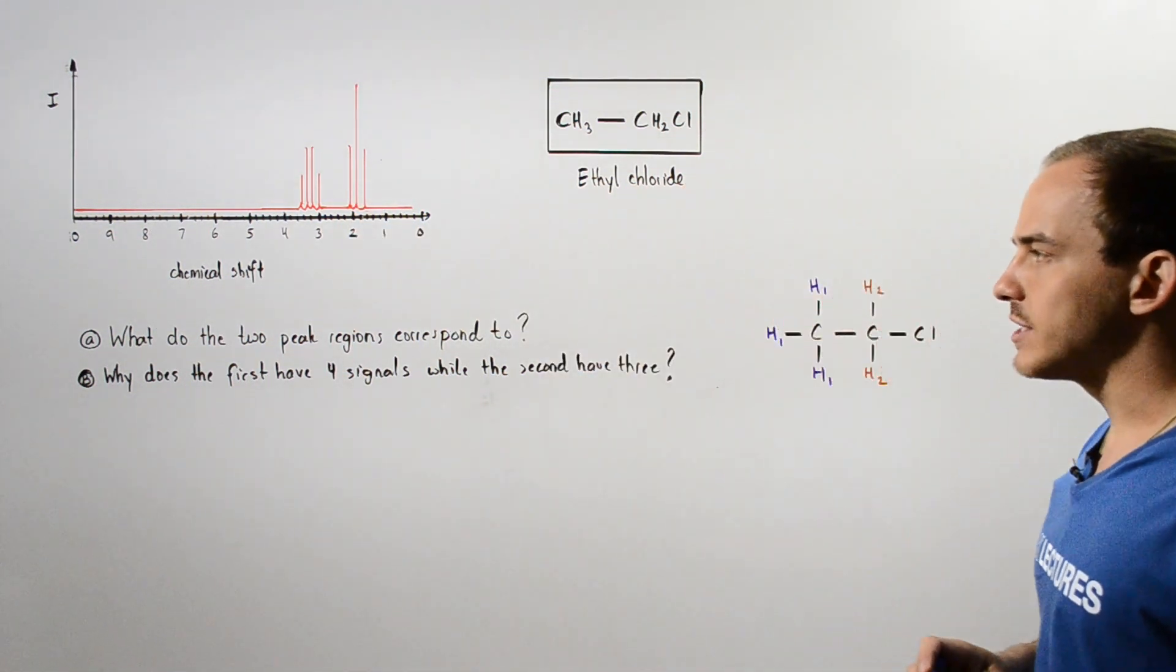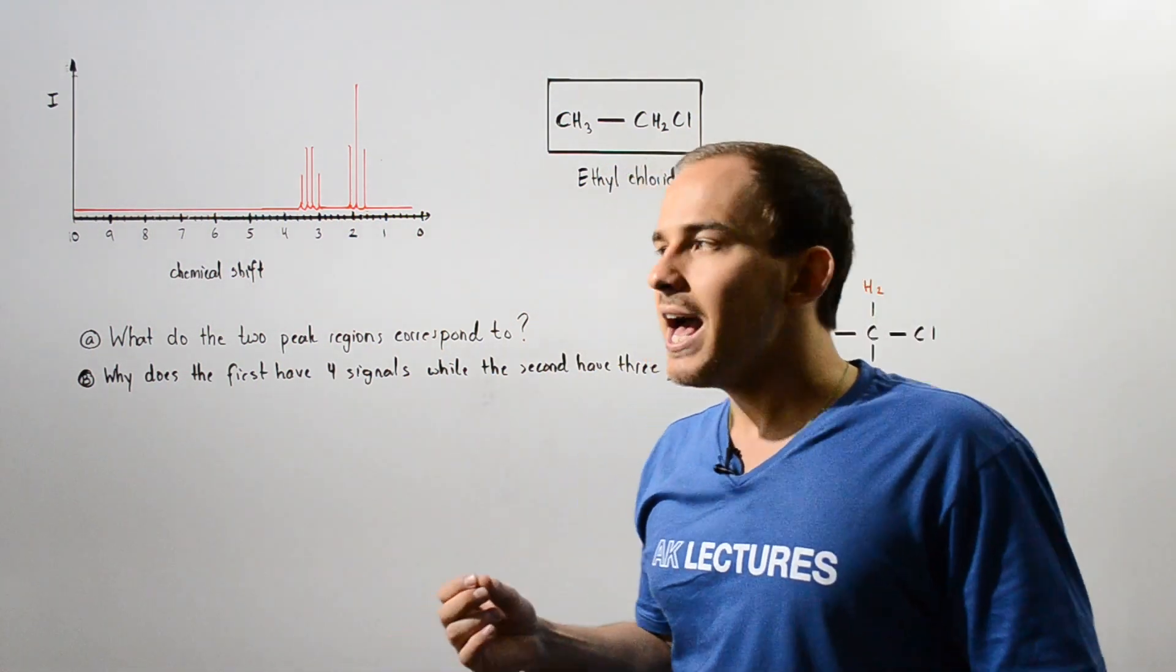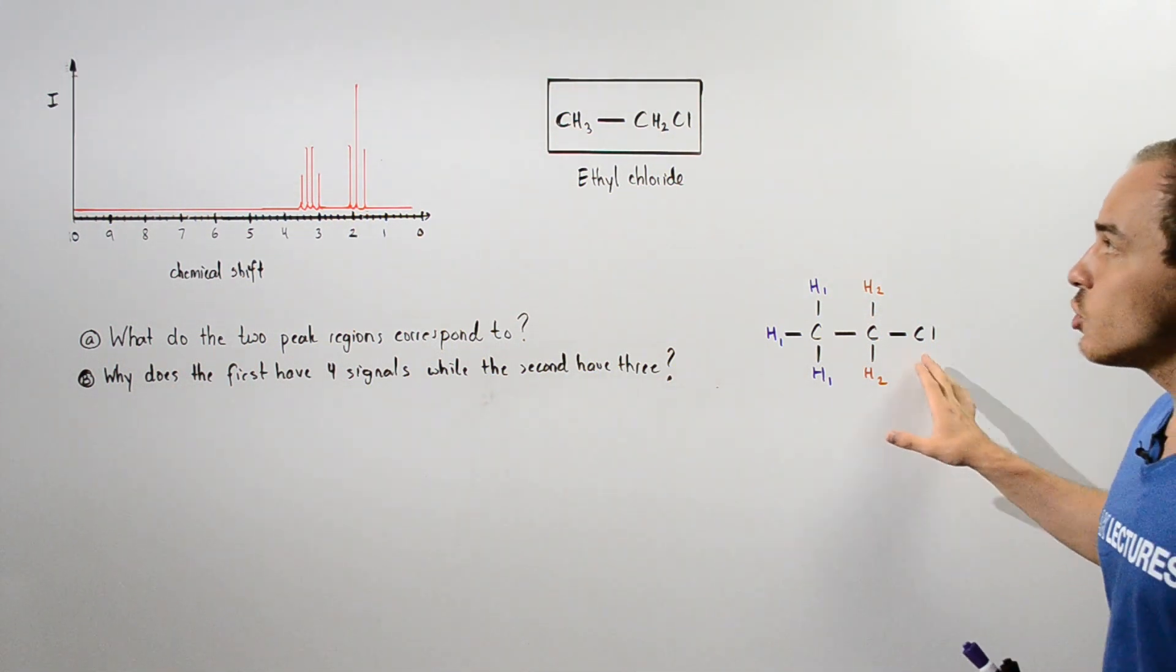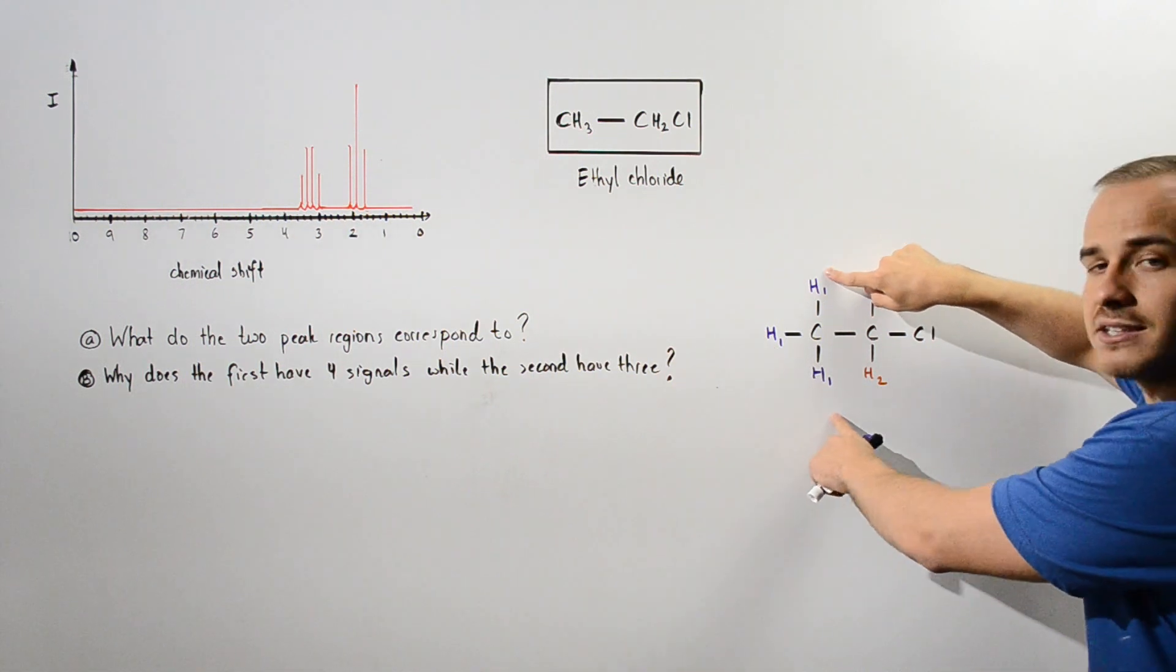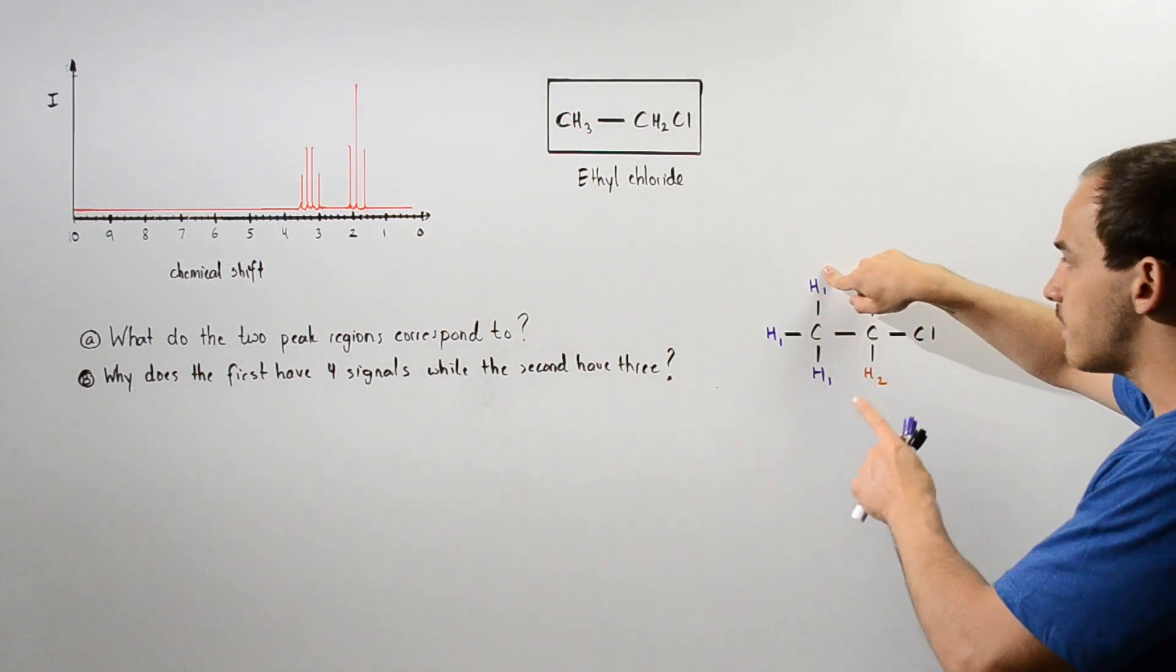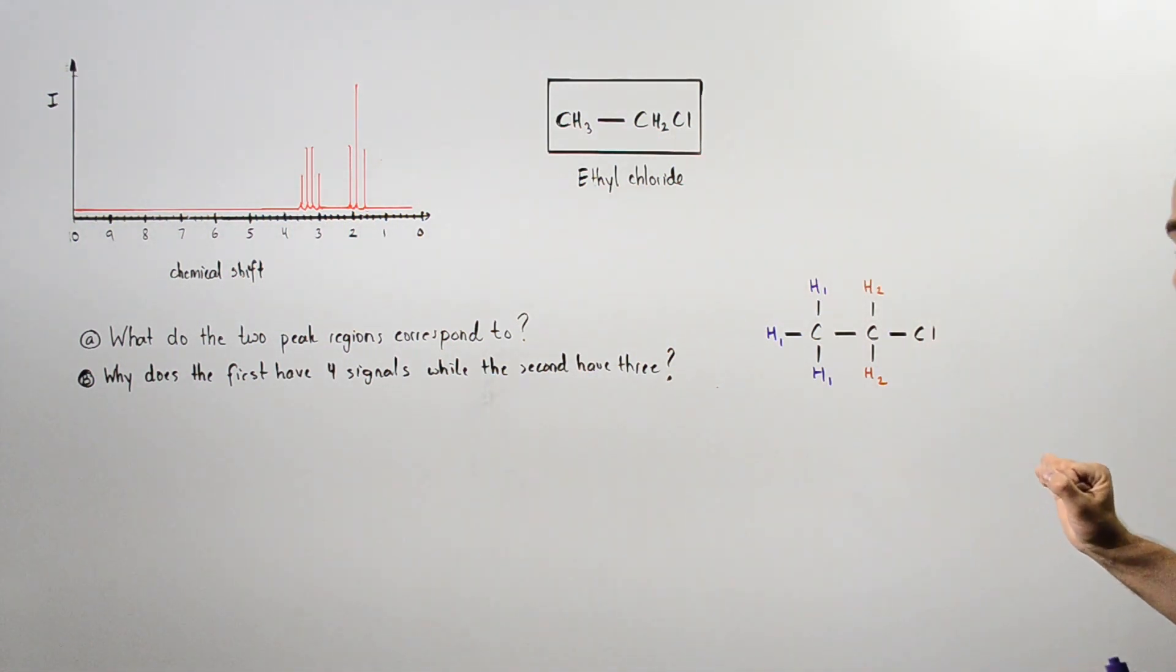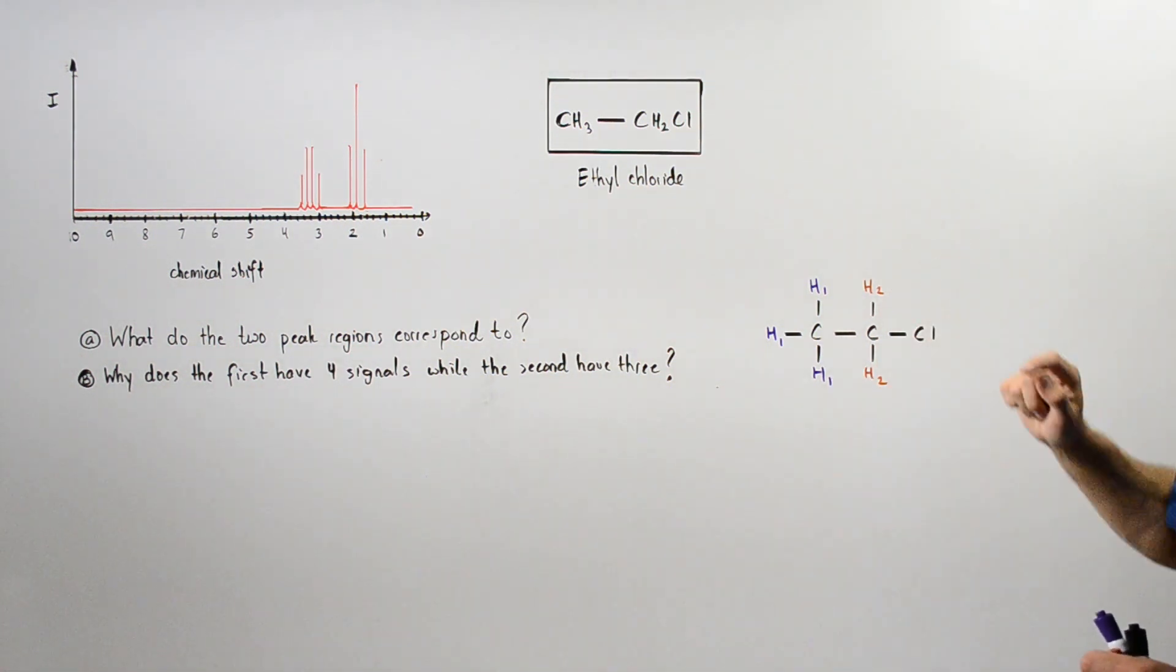Now to answer this question, let's take the ethyl chloride molecule and redraw it in the following fashion. So basically this carbon contains three identical H atoms. Let's call them H1 and give them the purple color. Now the second type of H atom will be given by the brown color and it's labeled as H2.